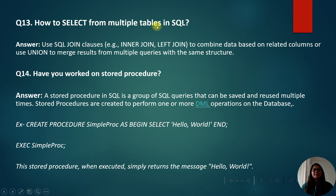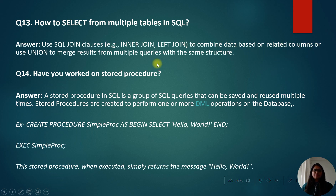Next question: how to select from multiple tables in SQL? You can answer: by using SQL join clauses like INNER JOIN or LEFT JOIN to combine data based on related columns, or use UNION to merge results from multiple queries with the same structure.